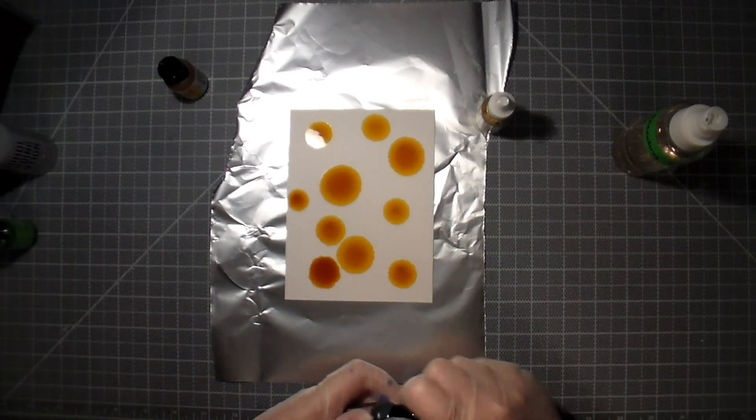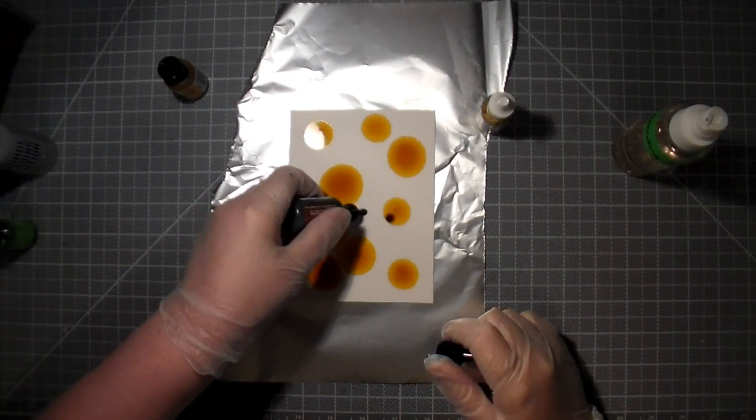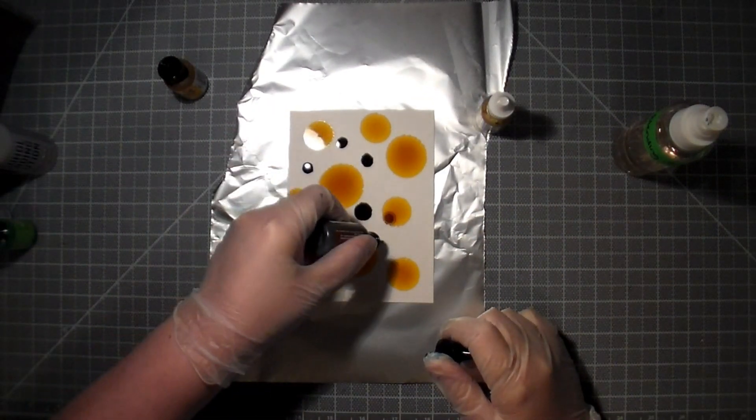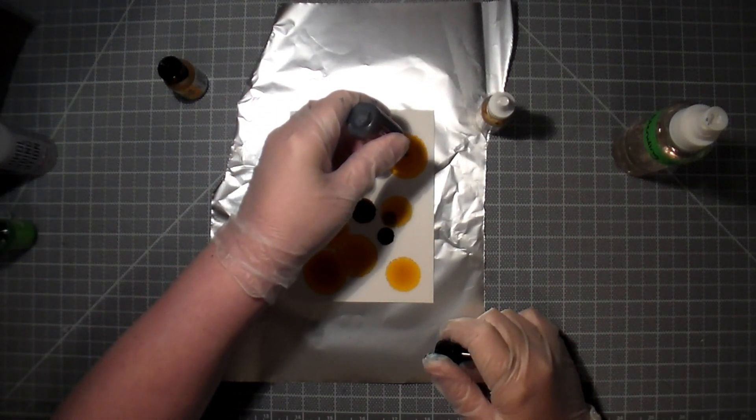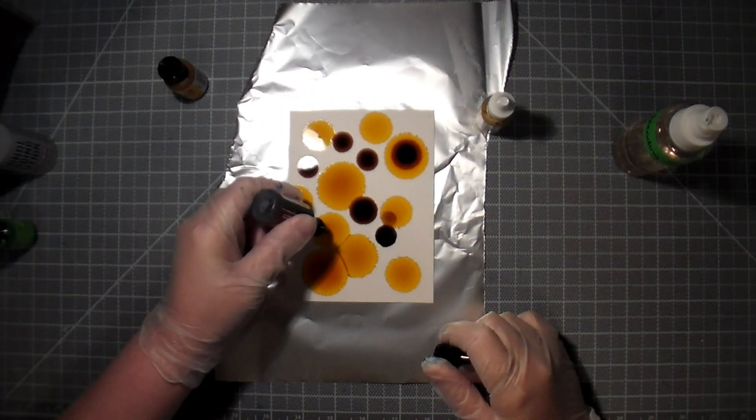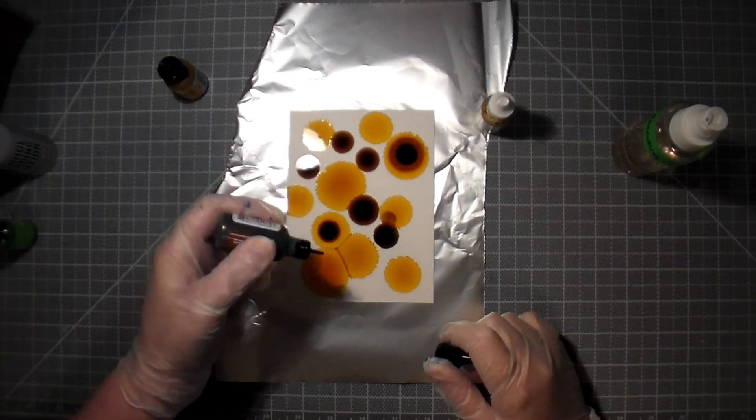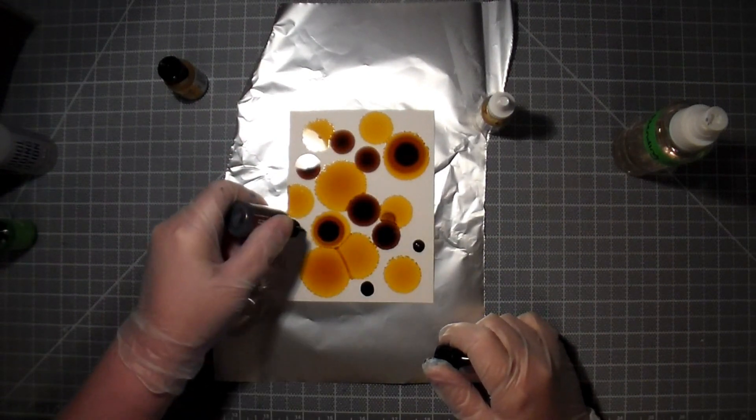Now I'm going to fill in some of the blank spots with some brown. It's a really beautiful color combination, and also I'm going to put some brown drops inside of some of the yellow drops, which adds another tone to the piece.